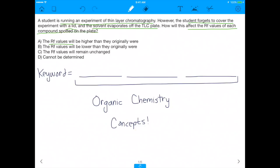Will the RF values be higher? In other words, will the RF values on this evaporated plate be higher than they originally were in the unevaporated plate? Will they be lower? Will they be unchanged, or can we not determine it?